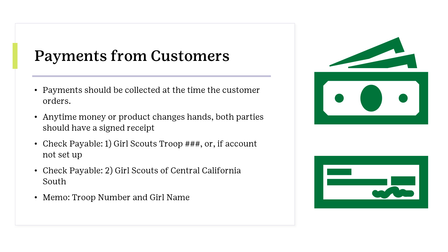Customer check payable instructions: When receiving payment by check, the check should be made payable to the Girl Scout troop if the payment is to be deposited into the Girl Scout troop account. For those troops that have not set up their troop account, the check can be made out to Girl Scouts of Central California South or the Girl Scout troop number. Either way, ensure that the troop number and Girl Scout name is added to the memo line of the check. Checks should only be accepted by customers that the Girl Scout family knows.